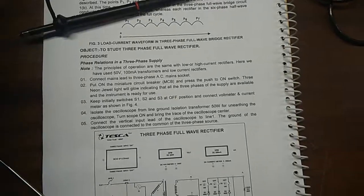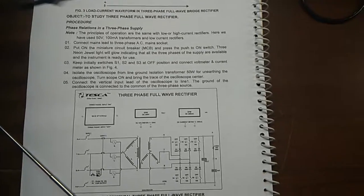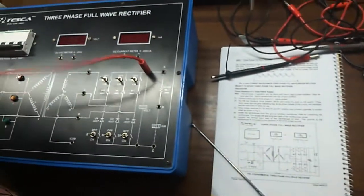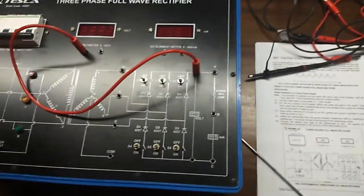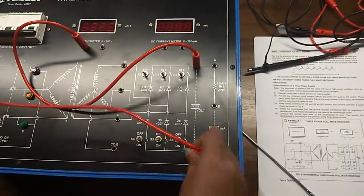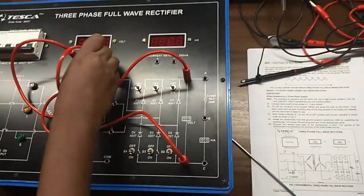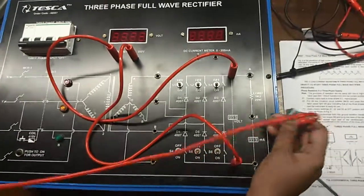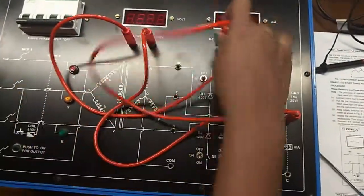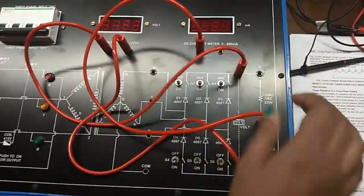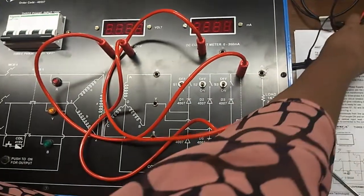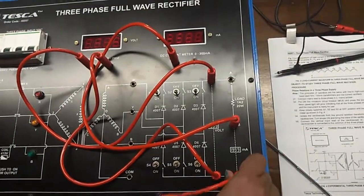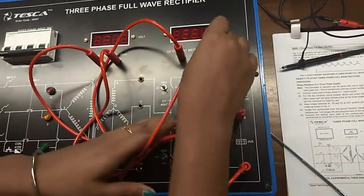We will study 3 phase full wave rectifier. First connect this here with the volt meter to see the voltage across the load and connect this with ammeter to see the current, to see the output current.